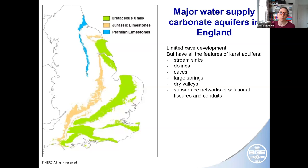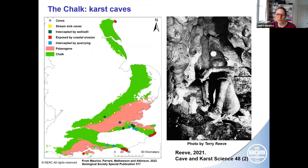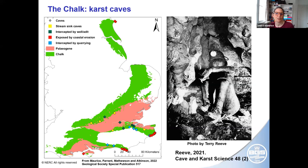I want to focus on the chalk and the Jurassic and Permian limestones, which are major water supply aquifers in England. They have very limited cave development, but they do have all the features of karst. Starting with the chalk, which is the one we've done the most work on — it was initially quite a surprise to me to find that there are karst caves in the chalk. This map shows the distribution of karst caves that we know about. The picture on the right is a cave near Reading in Berkshire, not known as a classic caving area. There's an excellent article in Cave and Karst Science by Terry Reeve documenting decades of cave exploration in the chalk.